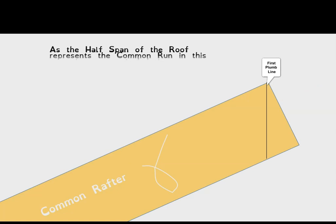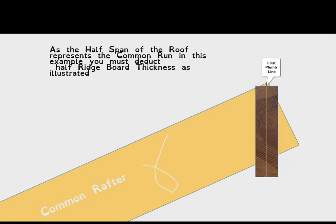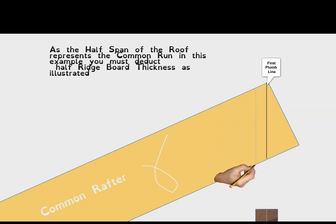One important point: when you use the half span as the common rafter run, you must allow for half the thickness of the ridge board. I draw a center line on an offcut of the ridge board, then draw a second line on top of the rafter using the bevel. That second line is the actual cut line with the skill saw, because you need to allow for half the ridge board thickness. The first line then becomes redundant.